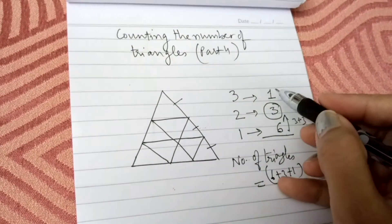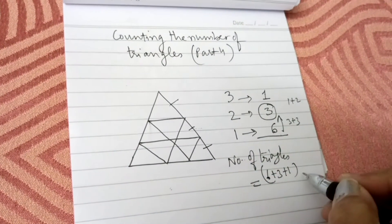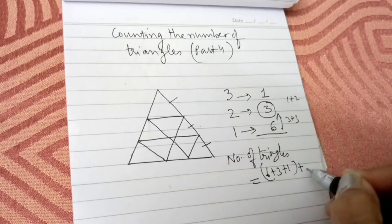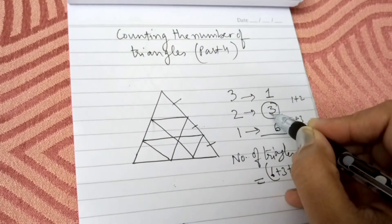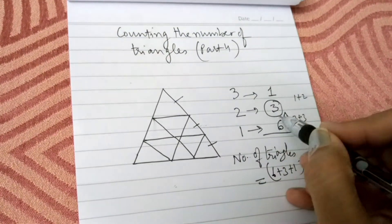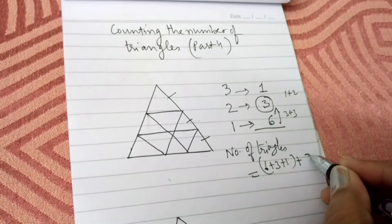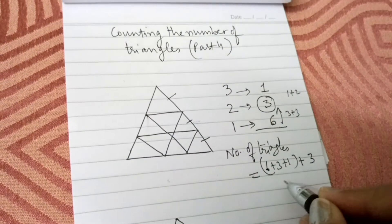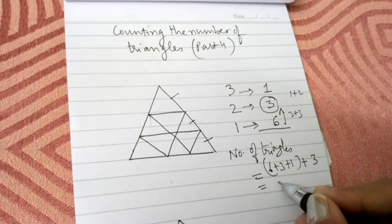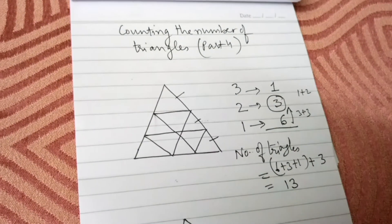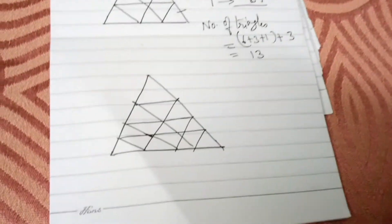This is the total of these three numbers. To this total you add the numbers on which we have put the circle — here there is one such number, which is 3. So the total number of triangles will be 13. Now let us take another figure.